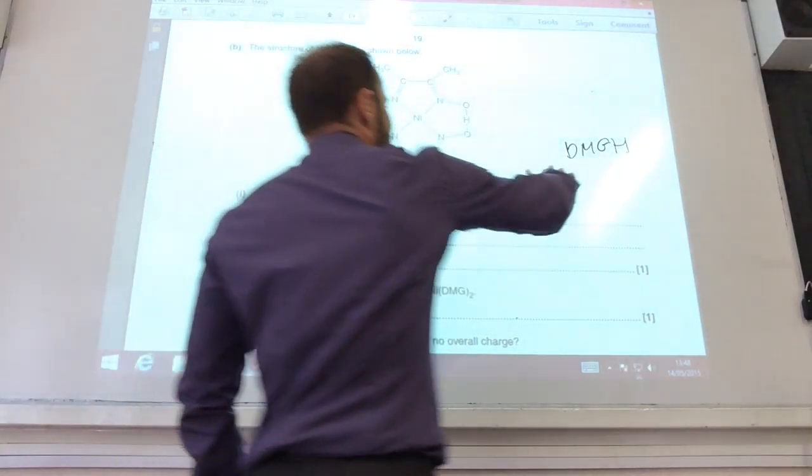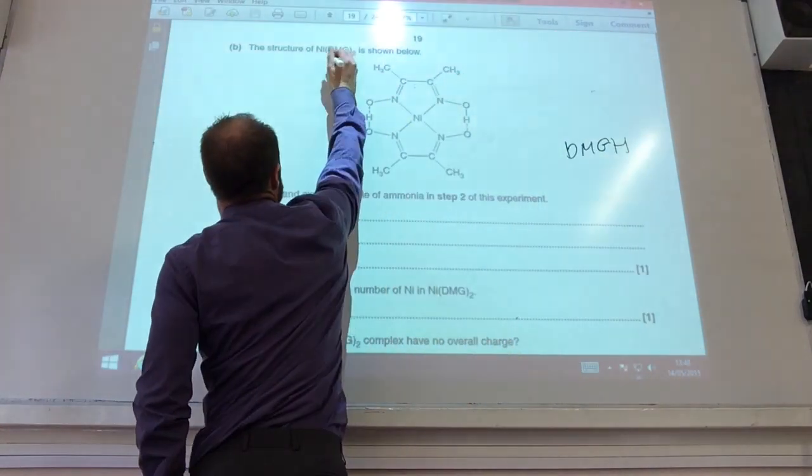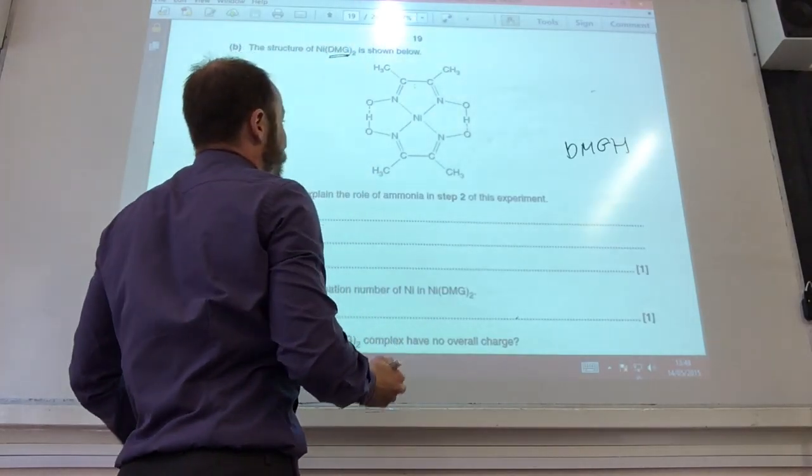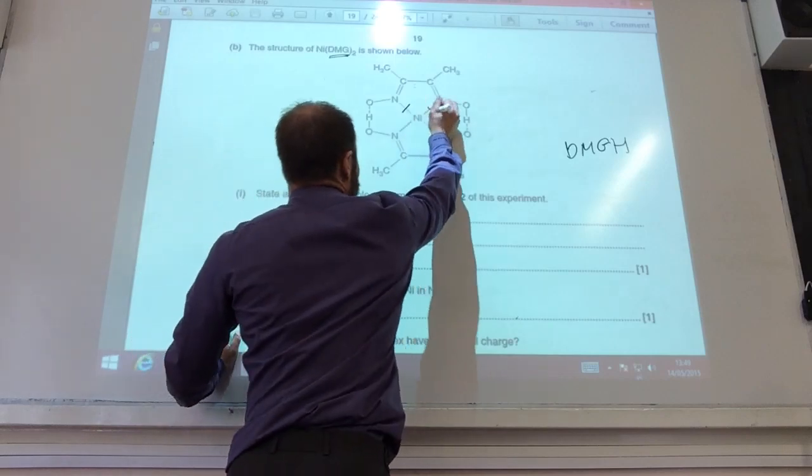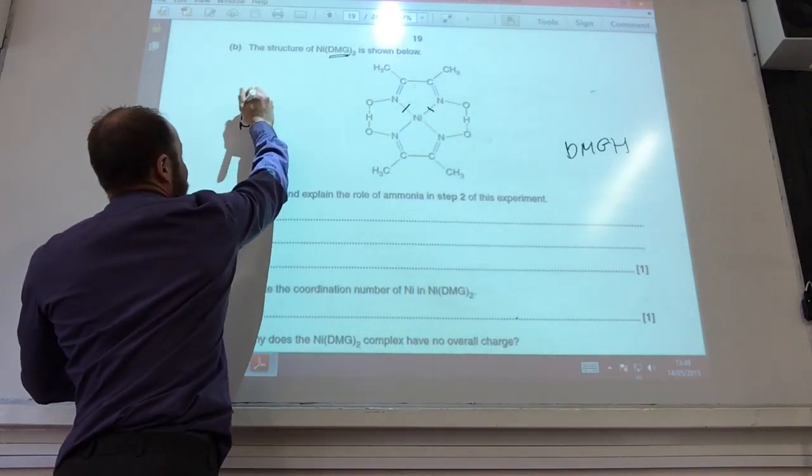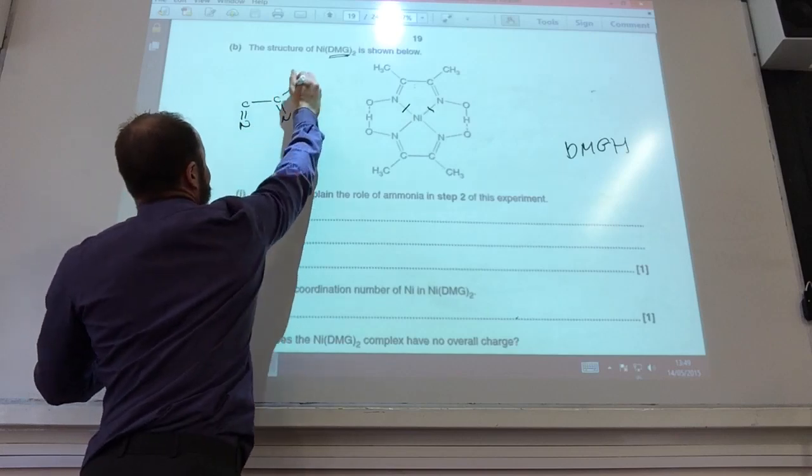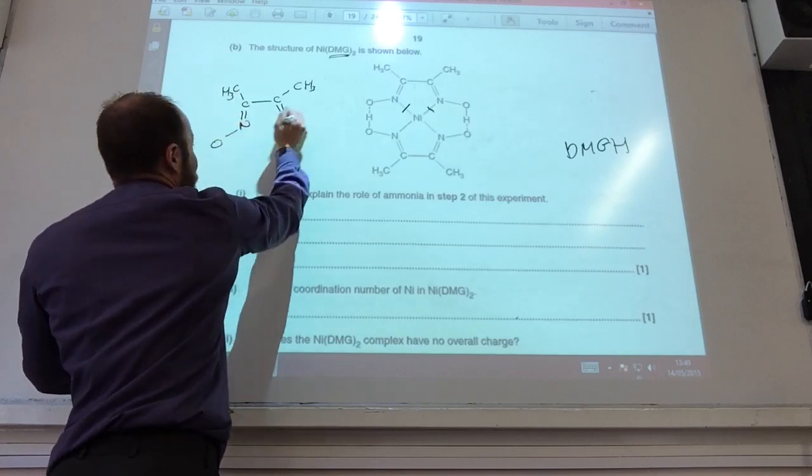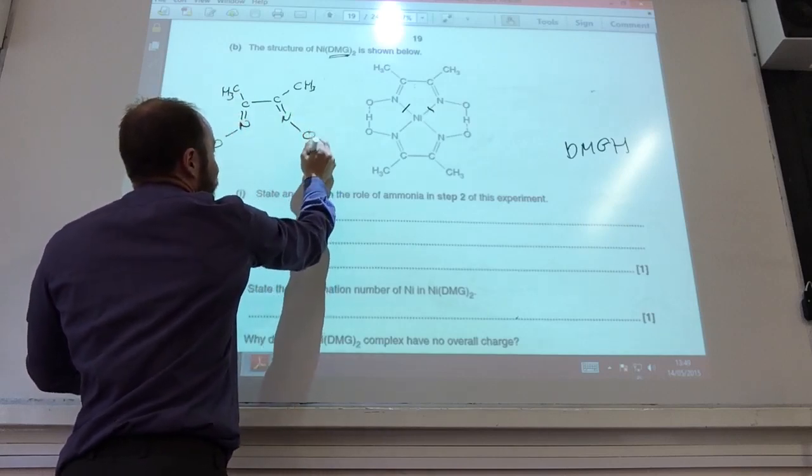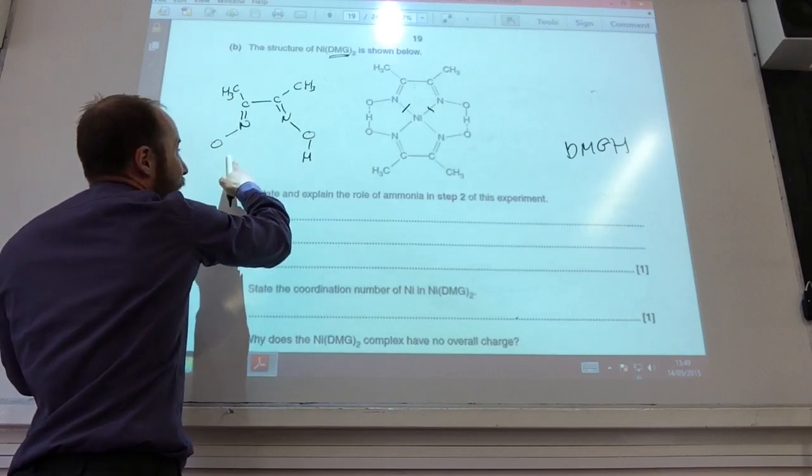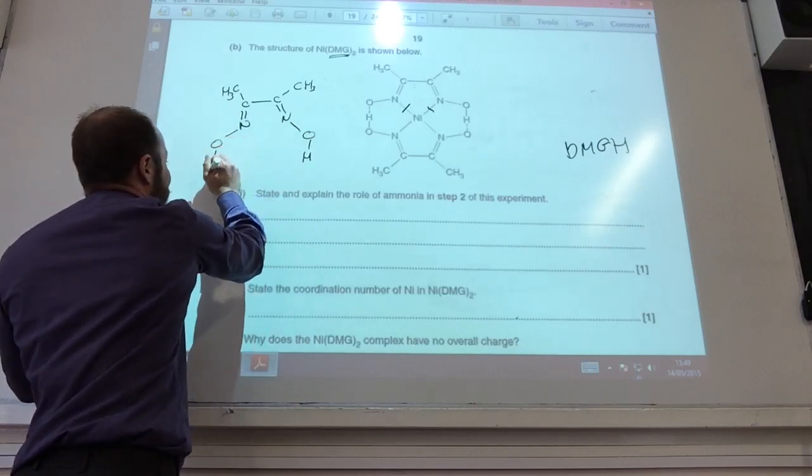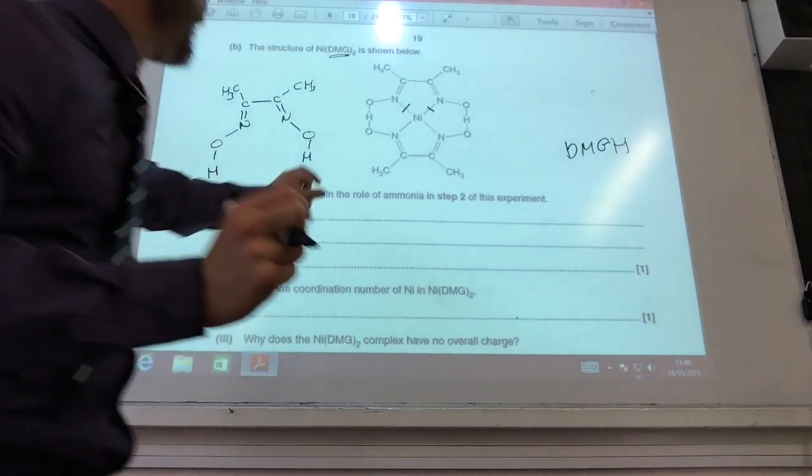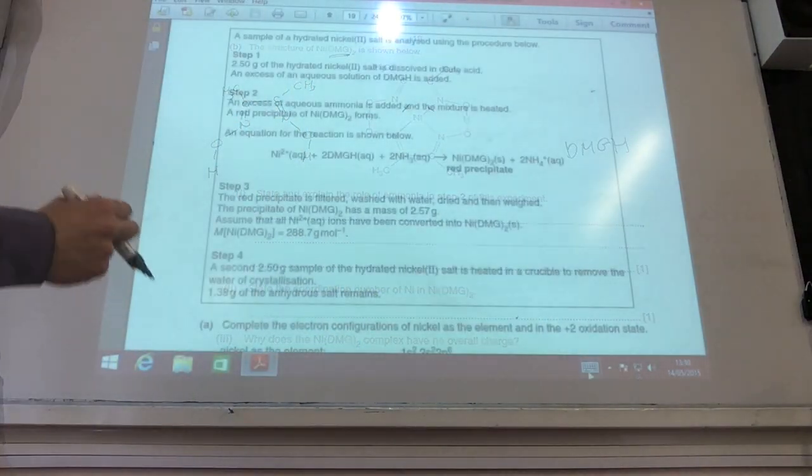They now want me to draw the structure of dmgh. This ligand here is dmg. dmgh has got an added proton. So let's have a look at that. We're going to break that down. Right. So N, carbon, carbon, double bond, N, CH3, CH3 for that. Coming off there I've got an O. Coming off there I've got an O and an H. So that is dmg. dmgh looks to me as I've got another hydrogen there. Remember, this dashed line, that's a hydrogen bond.